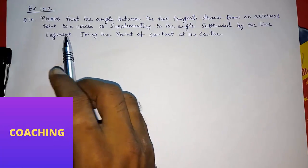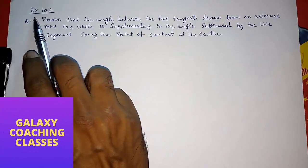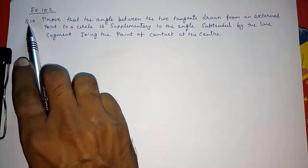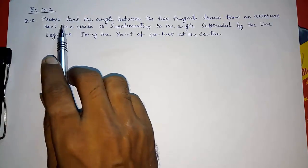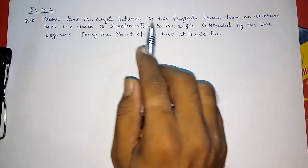Hello friends. Today we are going to solve CBSE Class 10th Exercise 10.2 Question Number 10: Prove that the angle between the two tangents drawn from an external point to a circle is supplementary to the angle subtended by the line segment joining the point of contact to the center.